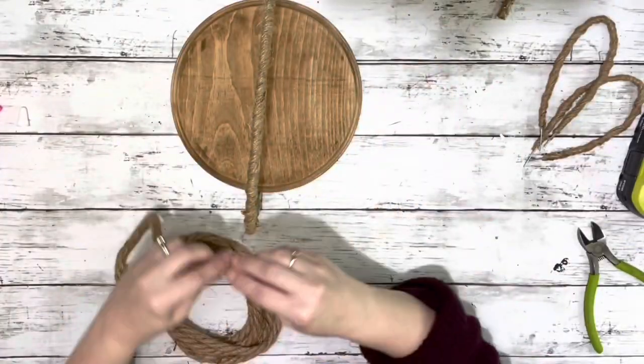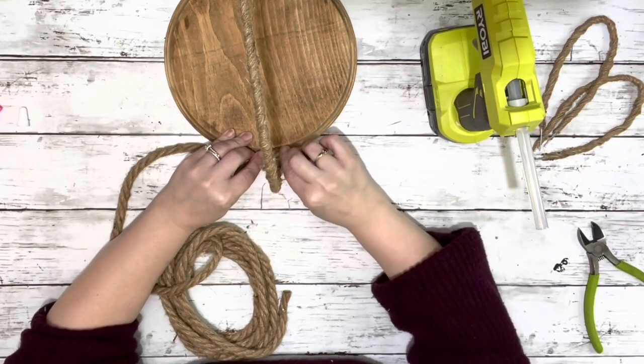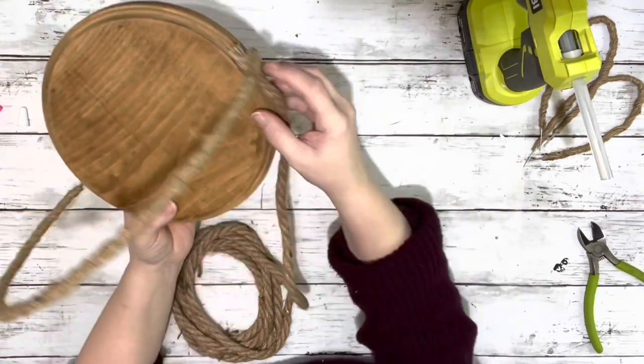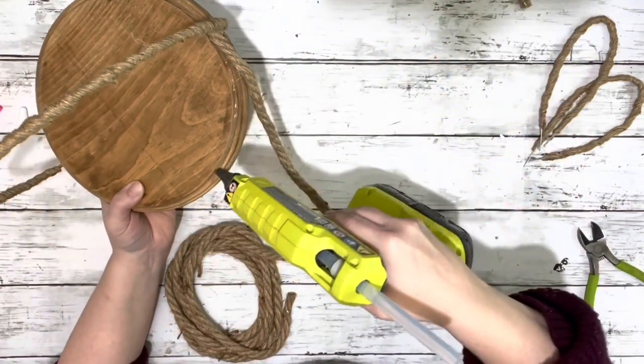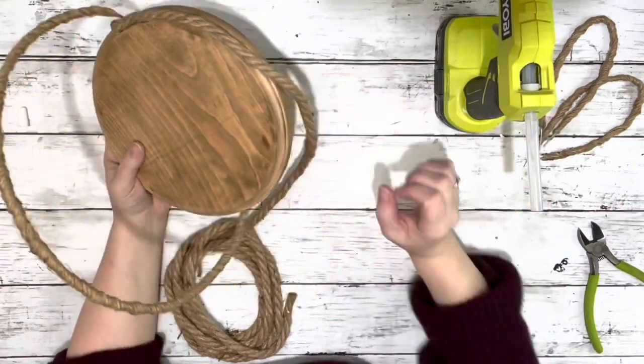Next I took the other package of nautical rope and just hot glued that around the top rim of the wooden plaque. The top of it has kind of like an indent and it's above where I had placed the wire in the side, so I just hot glued that all the way around.